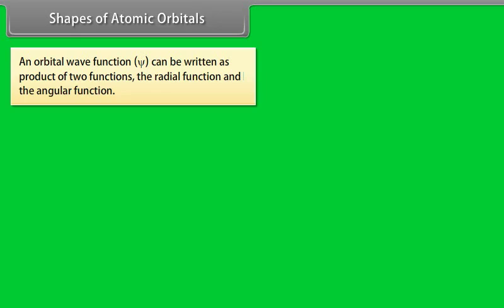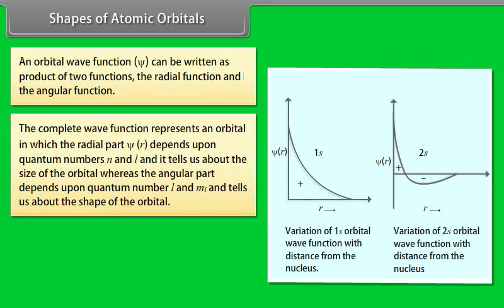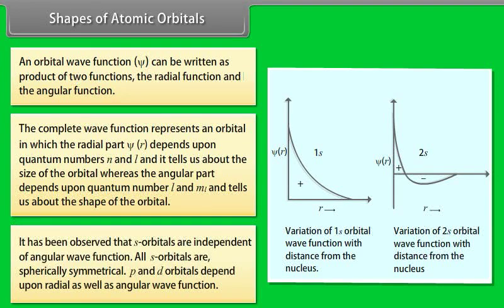Shapes of Atomic Orbitals: An orbital wave function Ψ can be written as a product of two functions — the radial function and the angular function. The radial part Ψ(r) depends upon quantum numbers N and L and tells us about the size of the orbital, whereas the angular part depends upon quantum numbers L and ML and tells us about the shape of the orbital. The positive and negative signs indicate whether the orbital wave function is positive or negative in a particular region. S orbitals are independent of the angular wave function and are therefore spherically symmetrical. P and D orbitals depend upon both radial and angular wave functions.